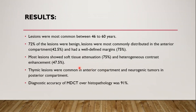Results: lesions were most common between 46 to 60 years. 72% of the lesions were benign, most commonly distributed in the anterior compartment and had a well-defined margin. Most lesions showed soft tissue attenuation and heterogeneous contrast enhancement. Thymic lesions were most common in the anterior compartment and neurogenic tumors in the posterior compartment. The diagnostic accuracy over histopathology was 91% in our study.